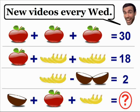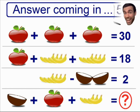Welcome to the easy brain teaser that is going viral and driving the internet insane. This brain teaser is just a simple system of equations which uses fruit, and we need to find the value of each fruit and add them all together to solve our last equation. If you want to try solving this problem on your own, pause the video now because we will go over the answer in 5 seconds.